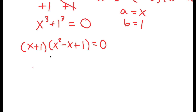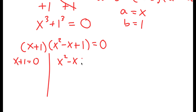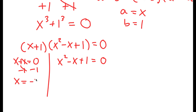This gives me two equations: x plus 1 equals 0, and x squared minus x plus 1 equals 0. For x plus 1 equals 0, I subtract 1 and get x equals negative 1. So this is one real solution.